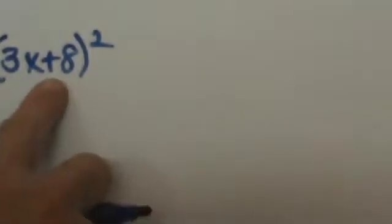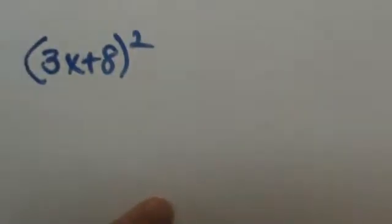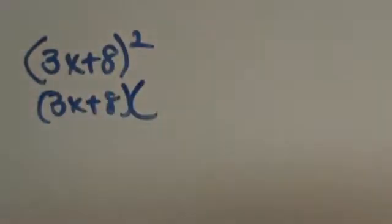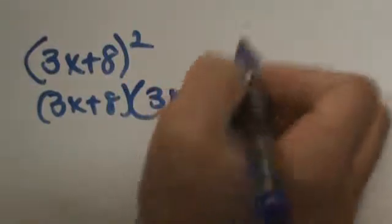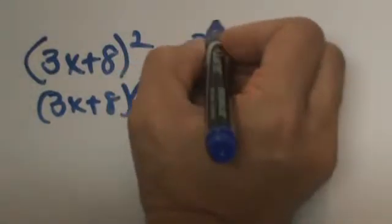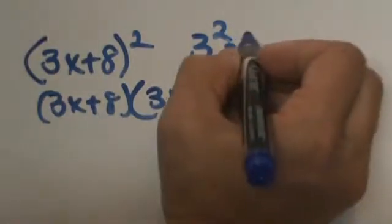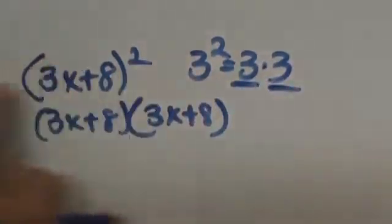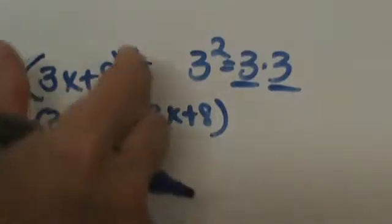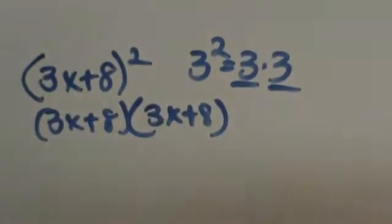We have 3x plus 8 quantity squared. What does that mean? It means we have two of those and we are going to multiply those together. We are going to have 3x plus 8 and we are going to write out a second one, 3x plus 8. Because we know that if we have anything like 3 to the second power that just means 3 times 3, or that term times itself, so it is no different with a binomial. You just have to write two of them out.